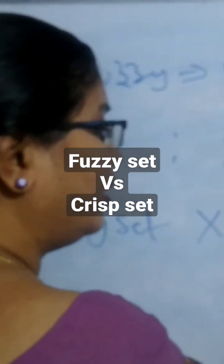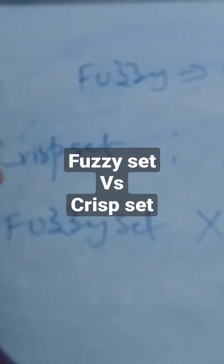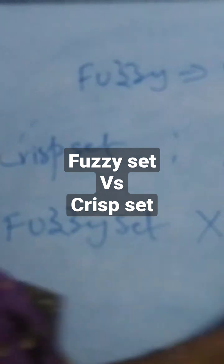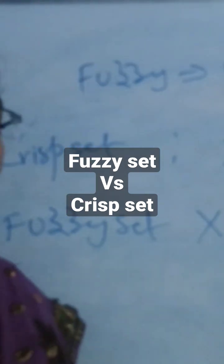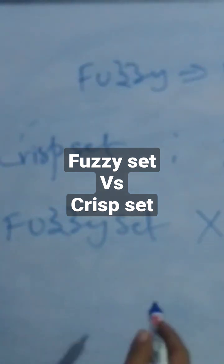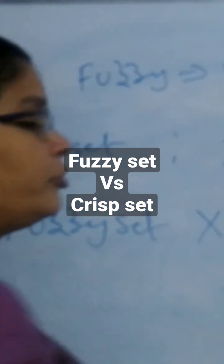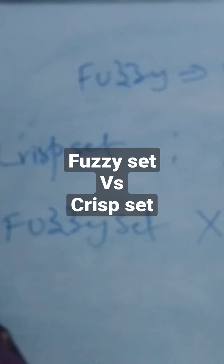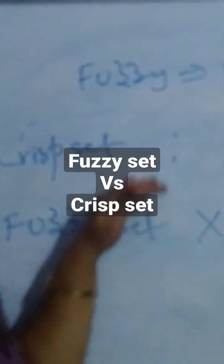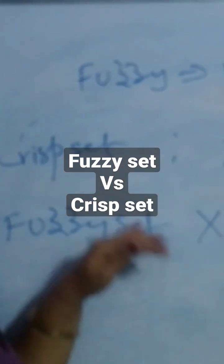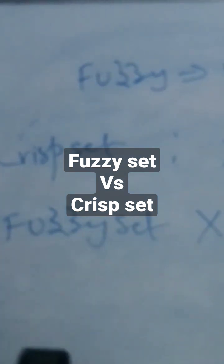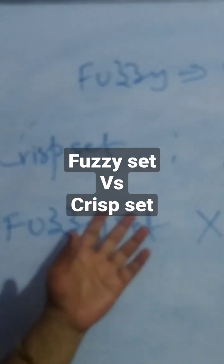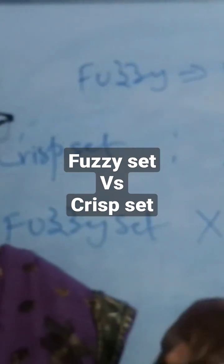In the fuzzy set, x belongs to the interval between 0 and 1, representing a range where the element has partial membership in that particular set. Whereas in the crisp set, the element either belongs to the set or does not belong to the set. These two are completely differentiated from each other — in the crisp set the element directly belongs to the set or not.